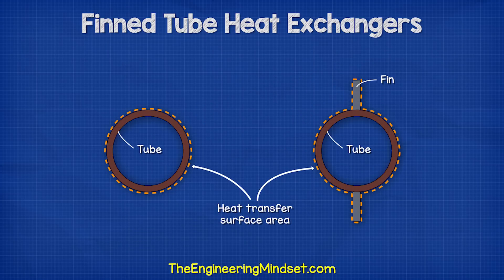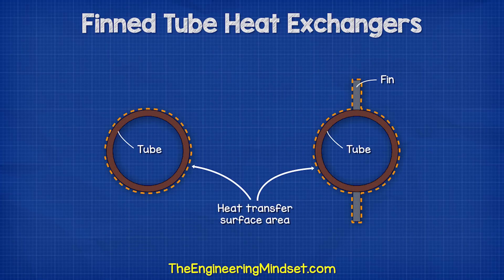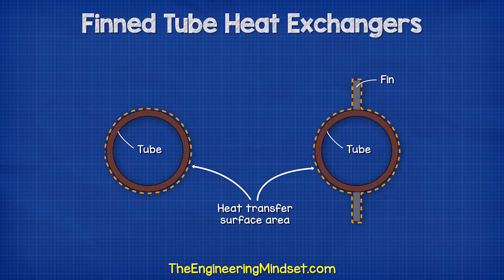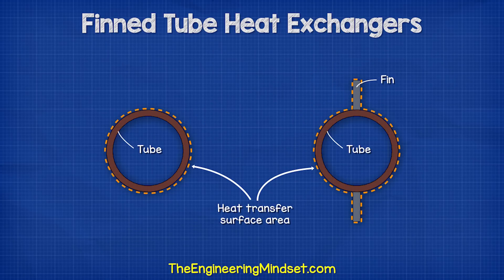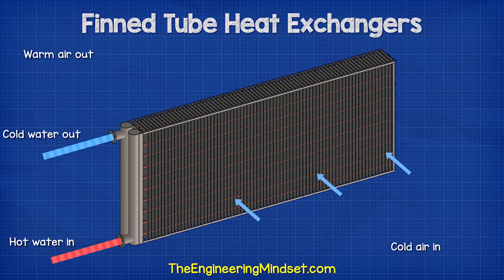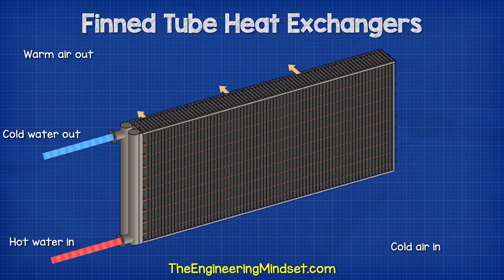The tubes will be covered with many thin sheets of metal known as fins. The fins increase the surface area of the tube wall, allowing more heat to transfer. The other fluid, for example, ambient air, will pass over the outside of this tube between the fins.